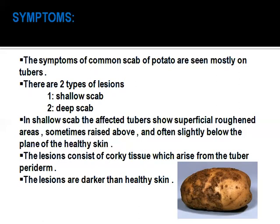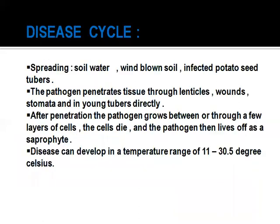The lesions consist of corky tissue rising from the tuber's surface. The lesions are darker than the healthy skin — a very characteristic feature of this disease. The disease can spread through soil, water, windblown soil, and infected potato seed tubers.